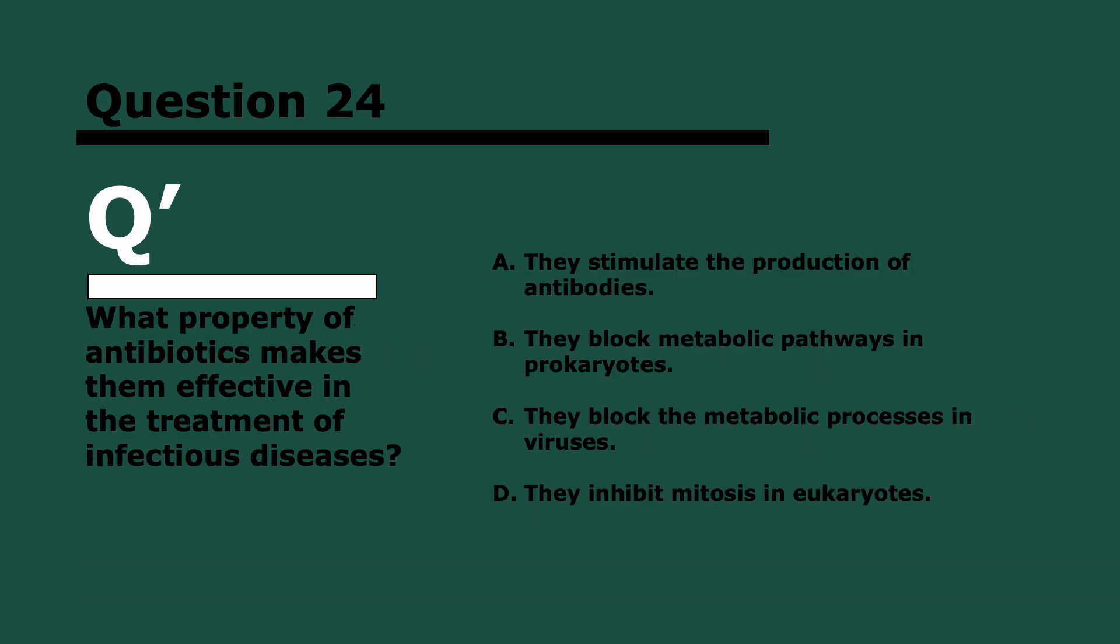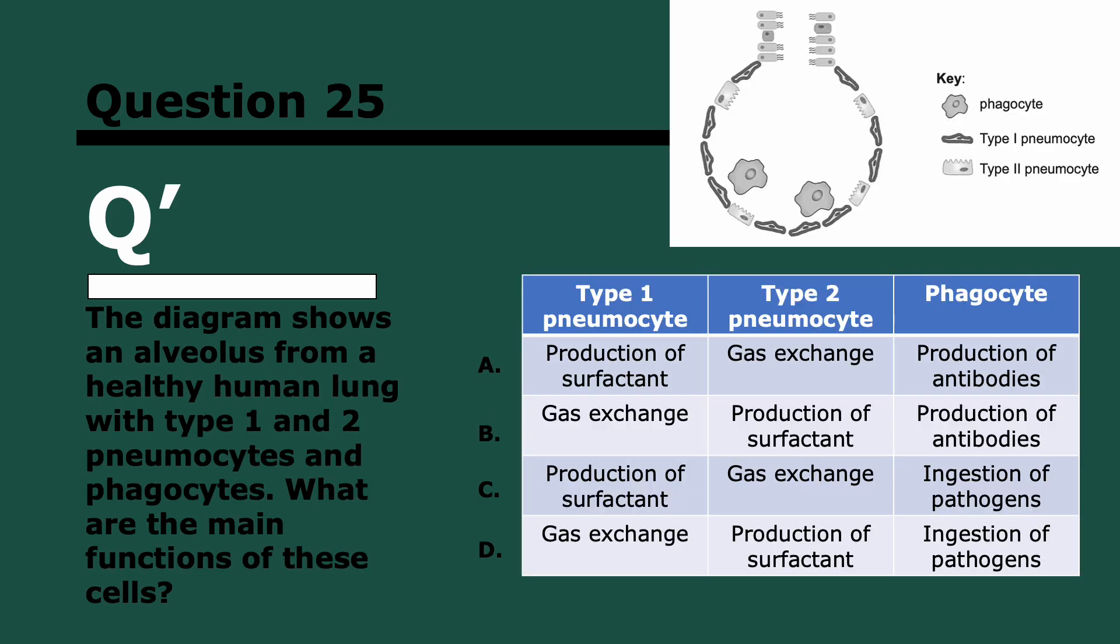Question 24. What property of antibiotics makes them effective in the treatment of infectious diseases? I think this is pretty simple. Three, two, and one. They block metabolic pathways in prokaryotes because you want them to target something that's not found in humans, otherwise they would kill you. They don't stimulate the production of antibodies, they're not immune related. They don't block metabolic processes in viruses because they're for bacteria. And they don't inhibit mitosis in eukaryotes because that would kill our cells. We're trying to kill the bacteria.